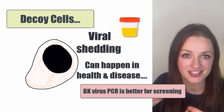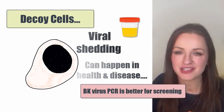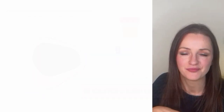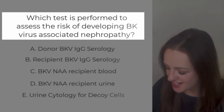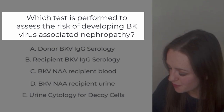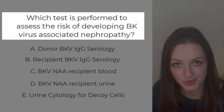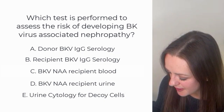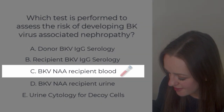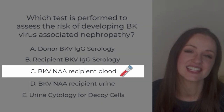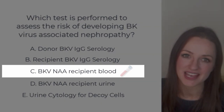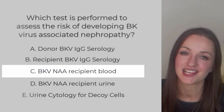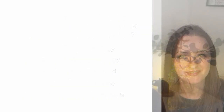Coming back to our question — which test is performed to assess the risk of developing BK virus-associated nephropathy? The answer is BK virus in the recipient blood — the PCR for BK viremia in the recipient's blood is the best screening test for risk of BK nephropathy, as it allows early detection and intervention.